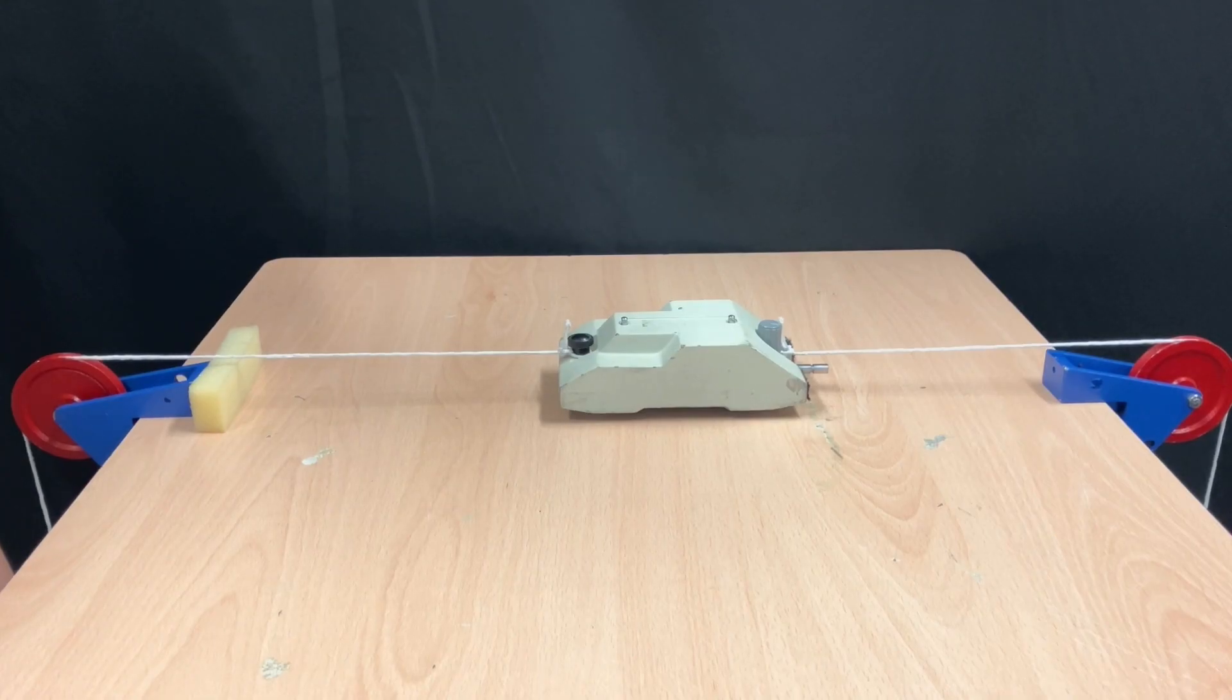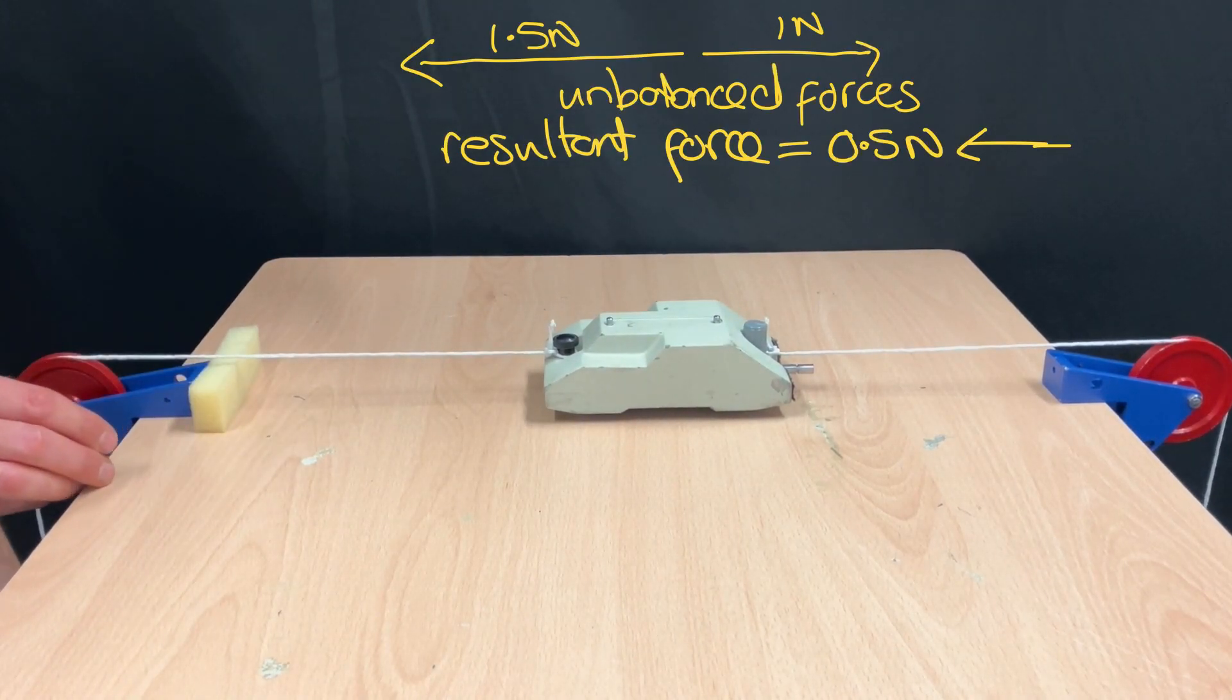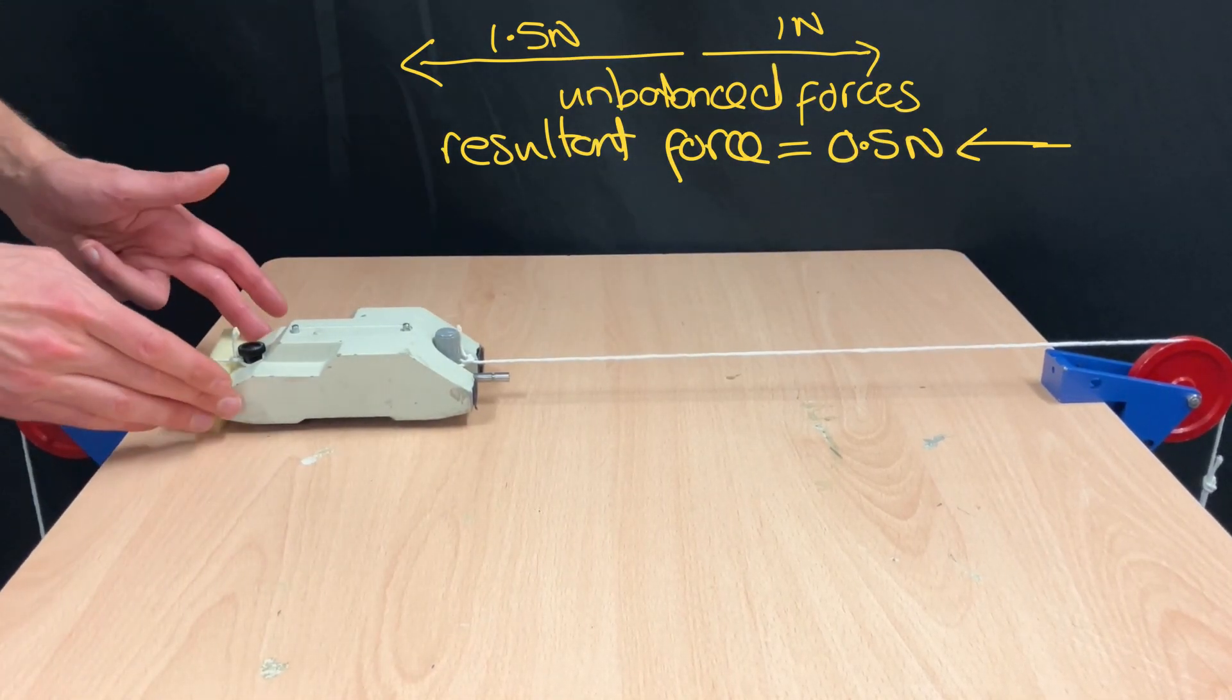If I now move the extra 0.5 newton of weight to the left hand side then it will accelerate to the left hand side because I've created a resultant force to the left.